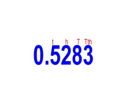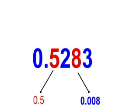The next number we will be looking at is 0.5283. The 5 is bigger than the 8 because the place value in the 5 is greater.